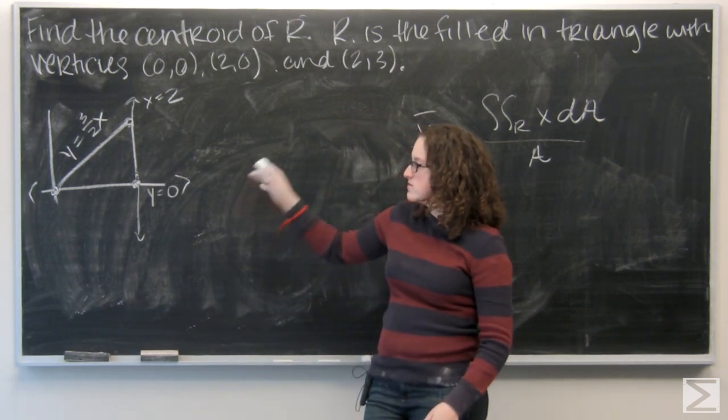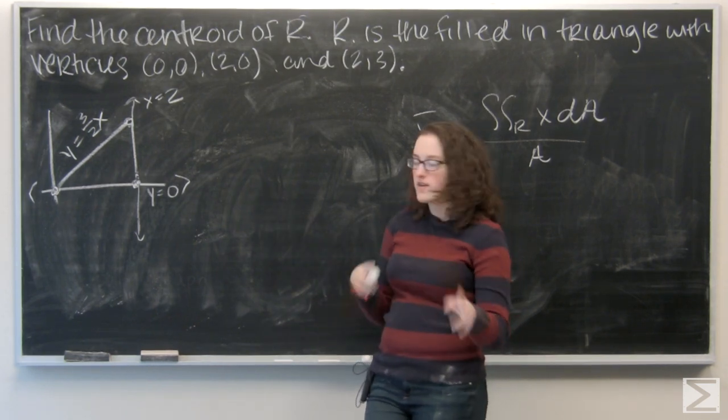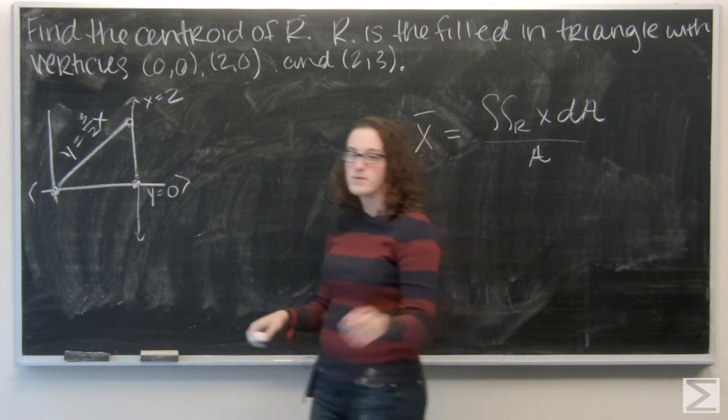Well, I know my base is 2 and my height is 3. Area of a triangle is 1 half base times height. 1 half and the 2 cancel each other out. Area of my triangle is 3.